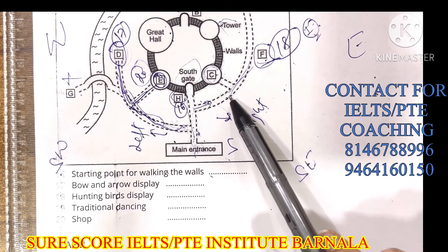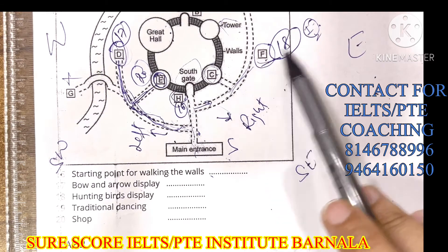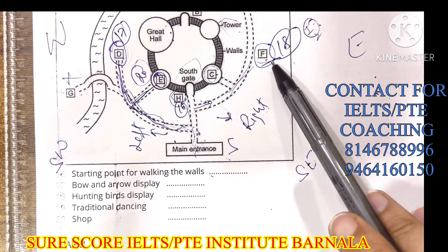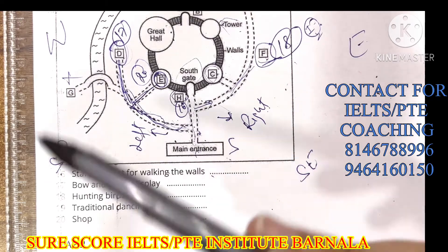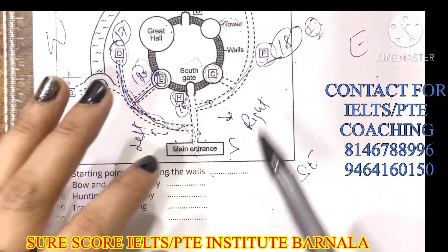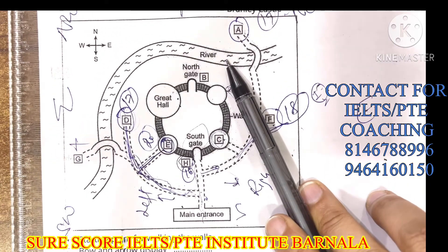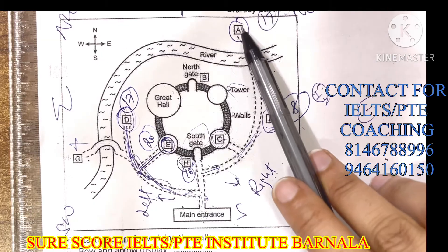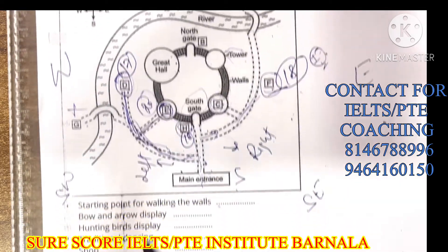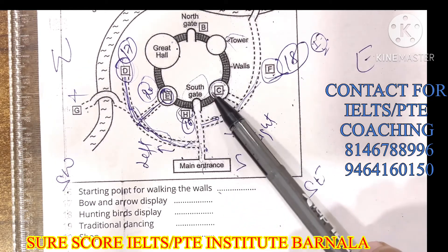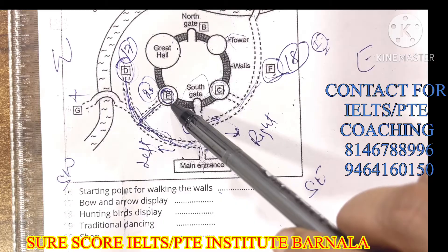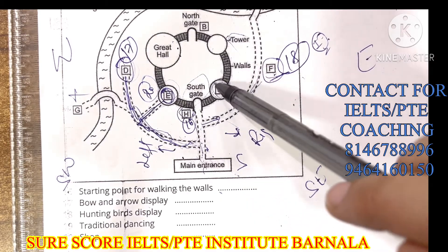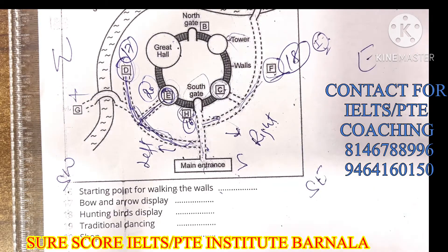For the hunting birds display, walk past the first tower and it's on the right side — answer F. For traditional dancing, go to the other side of the castle and cross the river via the bridge — answer A. For the shop, take first left then first right from the main entrance — it's inside one of the towers, answer E. I hope it's clear. Thank you, have a nice time. Bye bye, see you next time in the new module!